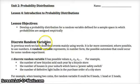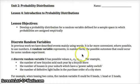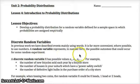So discrete random variables. In previous work, we have described events mainly using words, but it's far more convenient where possible to use numbers. A random variable represents, in number form, the possible outcomes that could occur for some random experiment.